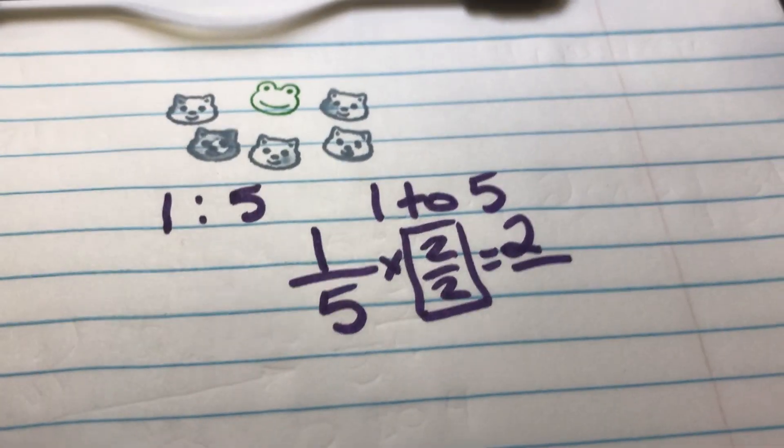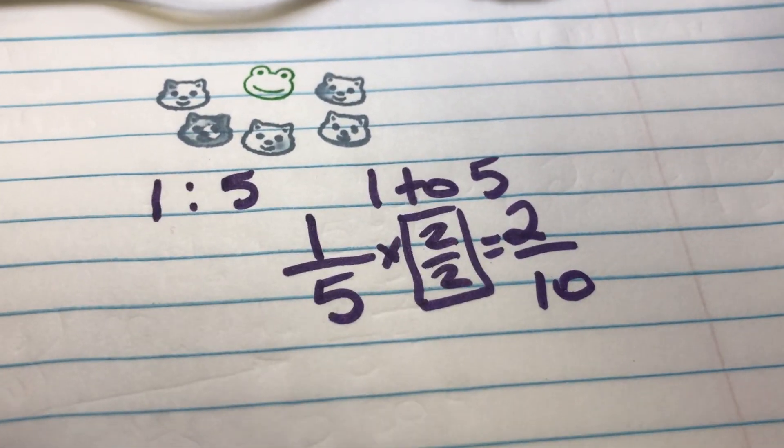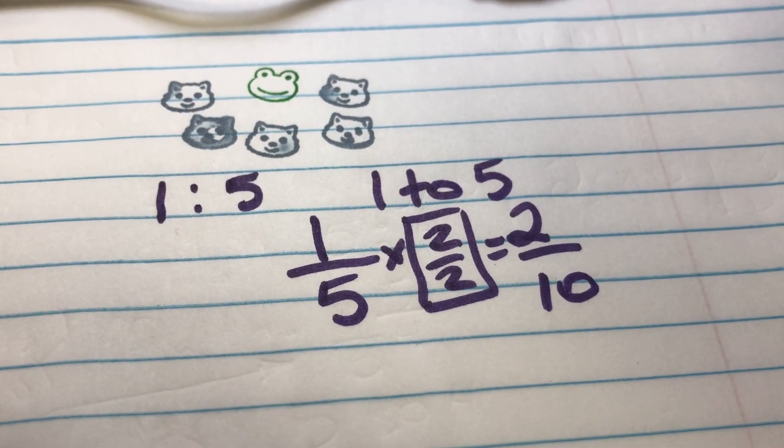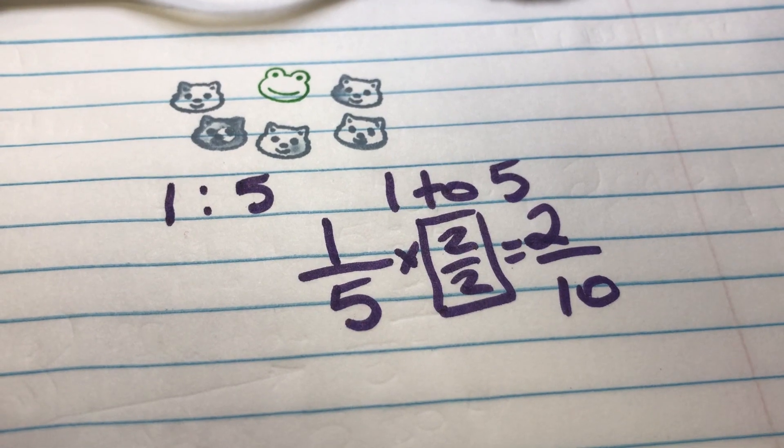So we know that five times two means that there are actually ten cats in the pet store. So this is just using ratios and equivalent ratios. Thank you for watching.